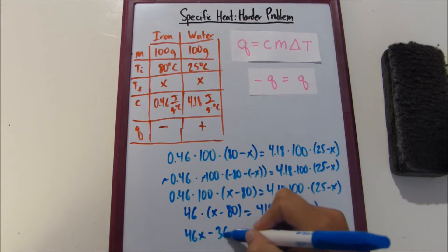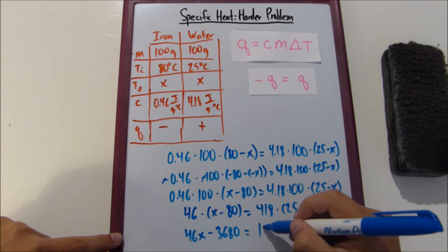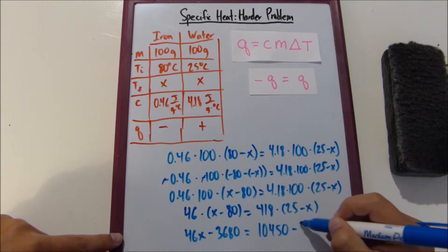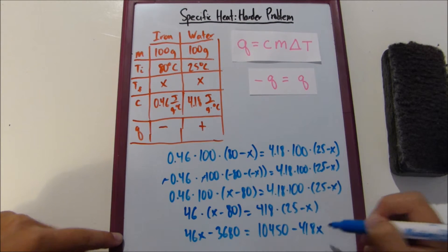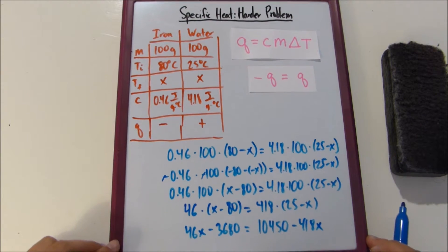Minus 3,680 equals 10,450 minus 418X. All right, now let's move those X's over to the other side.